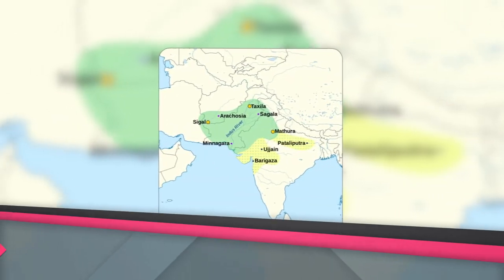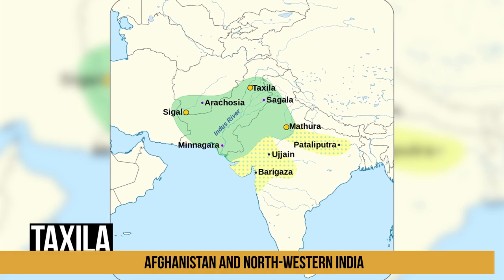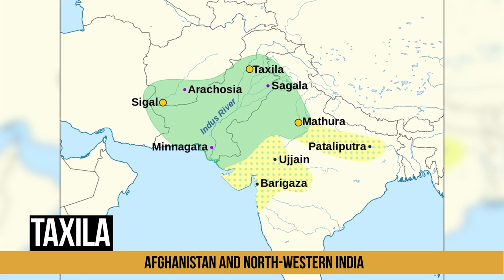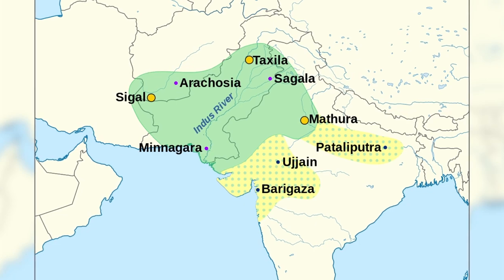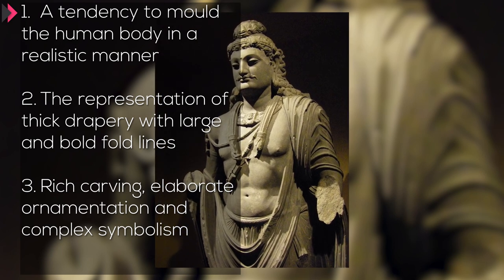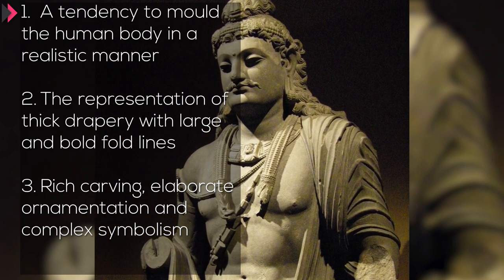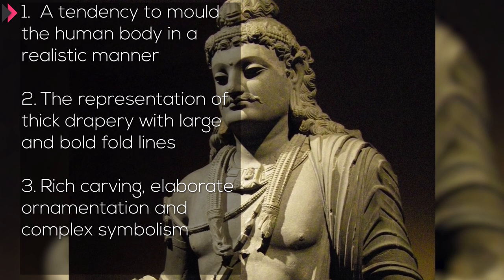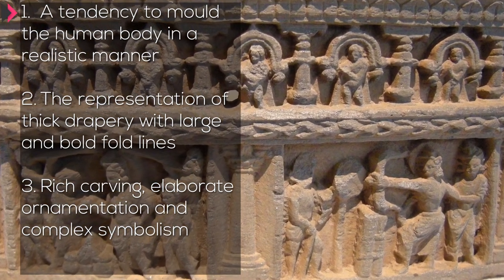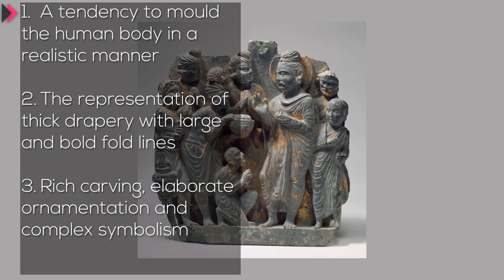Specimens of Gandhara sculpture have been found extensively in the ruins of Takshila and various ancient sites of Afghanistan and north-western India. They were executed in black stone. The Gandhara school has the following main features: a tendency to mould the human body in a realistic manner with great attention to accuracy of physical details, especially the delineation of muscles, the addition of moustaches, curly hair and the like.